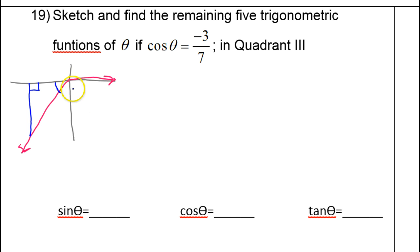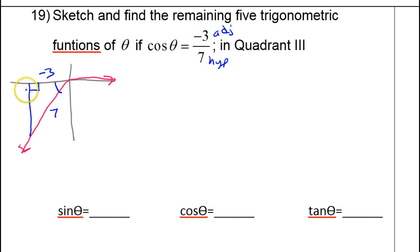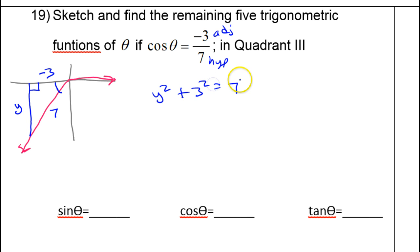We'll use this as our reference angle. Cosine is adjacent over hypotenuse, so I'm going to use negative 3 as the adjacent leg, and 7 is the hypotenuse. We're going to need the opposite leg, and whatever we get, it's going to need to be negative — this is down. We can only use the reference angle if we're very careful about the signs. Let's do the Pythagorean theorem — I'll call this y. So y² + 3² = 7², which gives y² + 9 = 49.